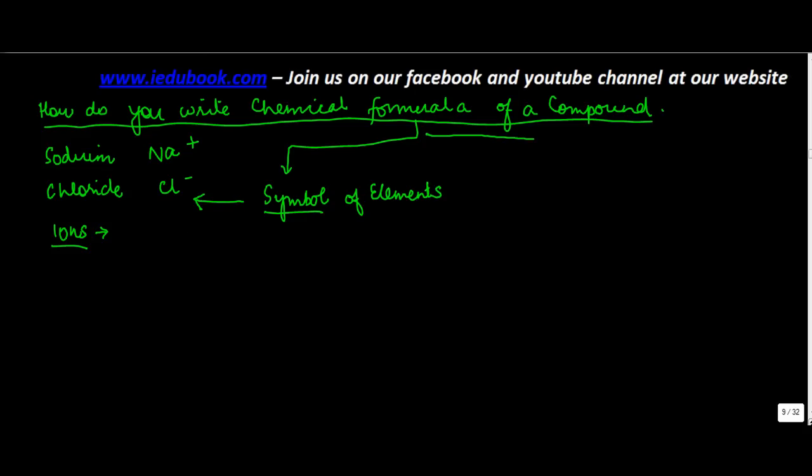In addition to symbol you need to know something called the valency of the compound. Symbol is fairly easy you need to remember them one to one. Let's understand this new concept which is valency of a compound. Valency refers to the combining capacity.